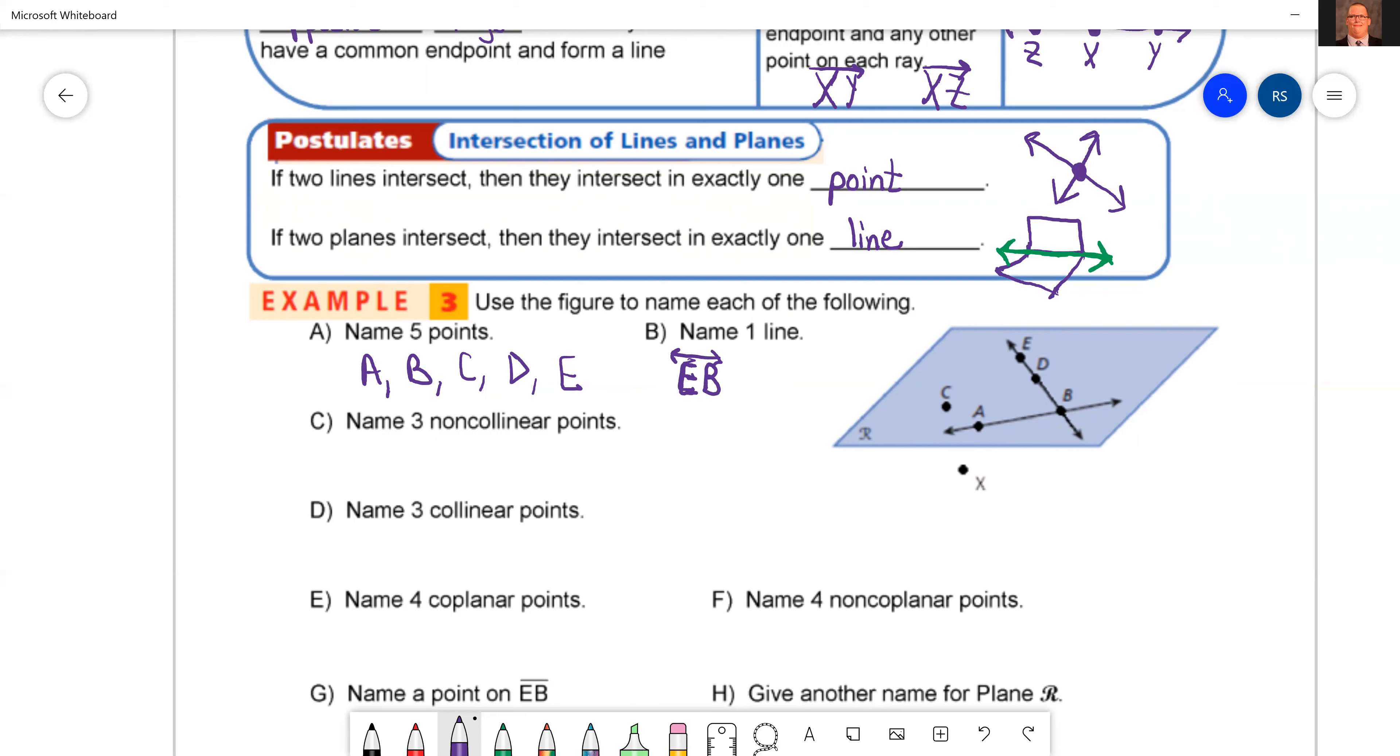Name three non-collinear points. So they can't be on the same line. Again, there's multiple ones. As long as they're not on the same line, you can use them. So you can say EDB, can't say that, they can't be all on that line. As long as they're different, think of it like you're wanting to make a triangle. Try to make a triangle with the points. So I don't know, E, A, B I guess. E, A, and B.